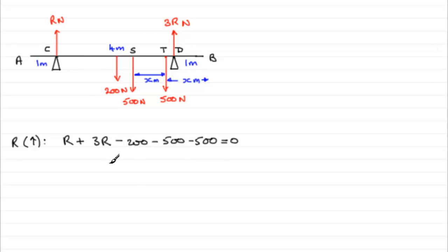So from this we can see that 4r, and if we add together the 200, 500, 500 that would be 1200 or minus 1200. Add it to both sides you're going to get 4r equals 1200. Divide both sides by 4 and then you end up with r equals 300, 300 newtons.